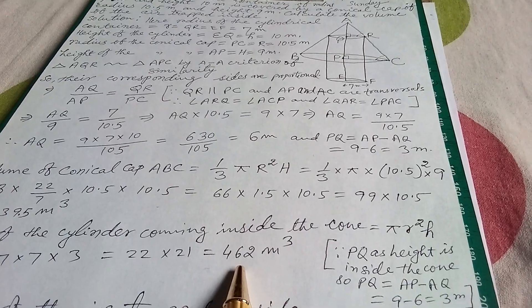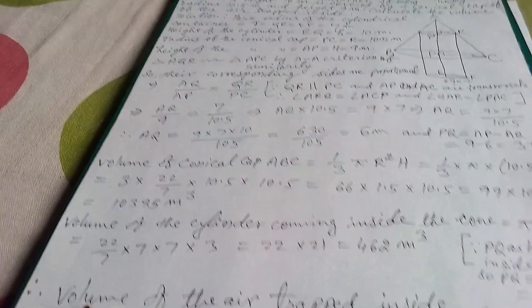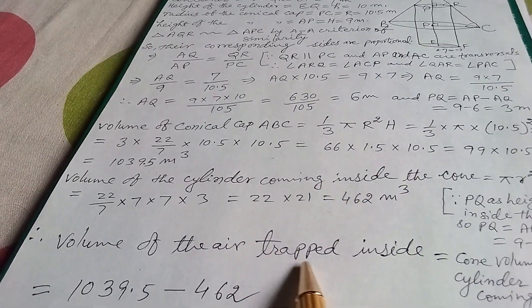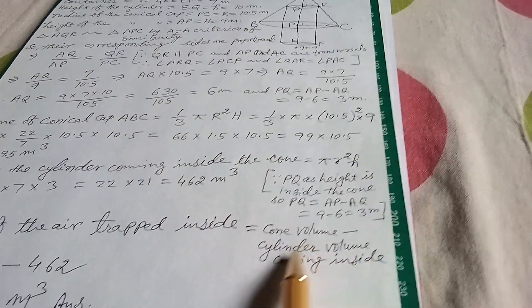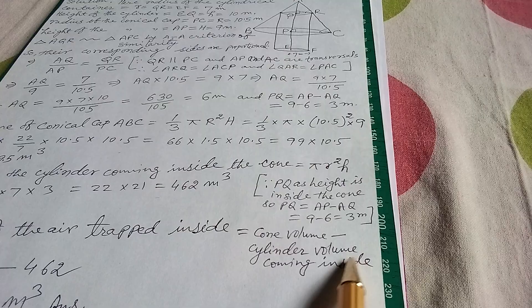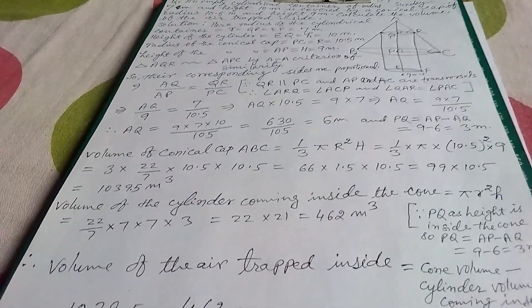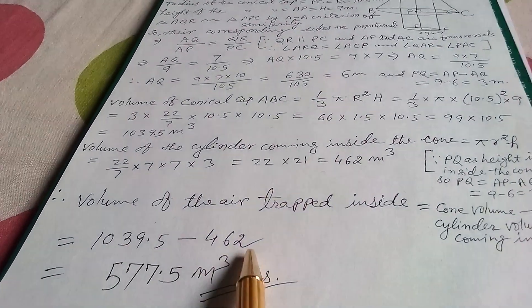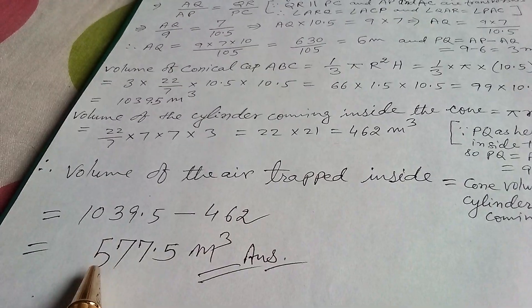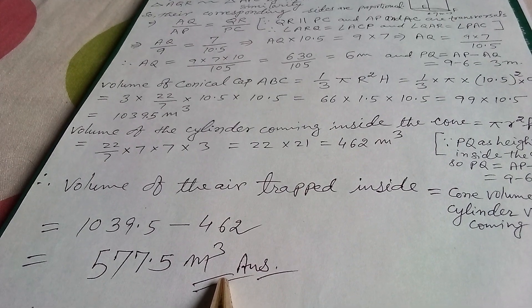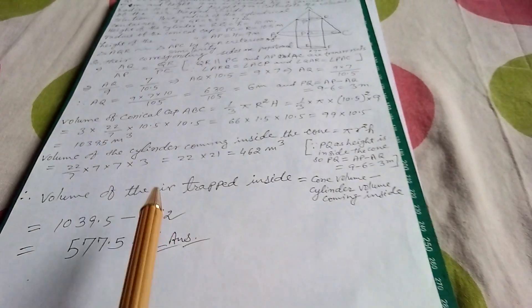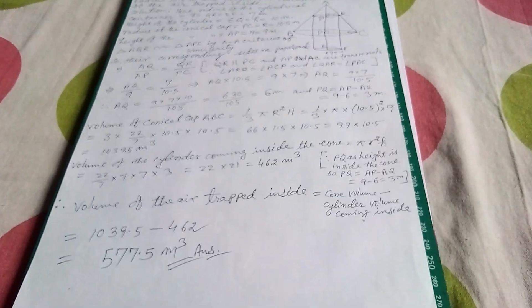Now therefore volume of the air trapped inside equals cone volume minus cylinder volume coming inside. So 1039.5 minus 462 equals 577.5 meter cubed. This is our answer. Thank you. If you like please share and subscribe.